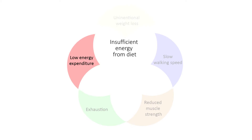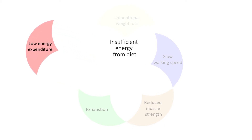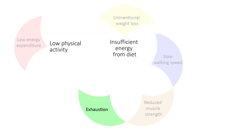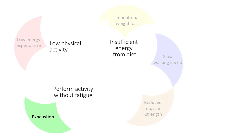A low energy expenditure, another component of the phenotype model, is centred around quantifying how much physical activity a person actually does, which includes walking, exercising and sitting. Exhaustion reflects the ability to maintain your daily activities without feeling fatigued, so it is very much a subjective experience. That makes it different to a low energy expenditure, as it is not concerned with how much a person actually does, but how they experience this.